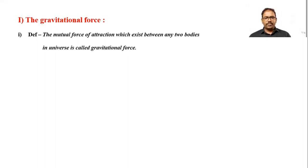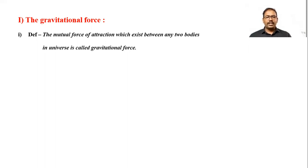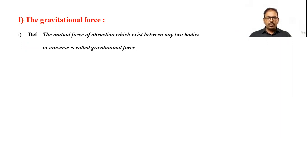Beyond Earth, other planets also exist and the attraction force of the Sun is effective on these planets as well — that is why the planets revolve around the Sun. So in the universe, the force of attraction between any two objects is the gravitational force, including smaller objects on the surface of Earth.